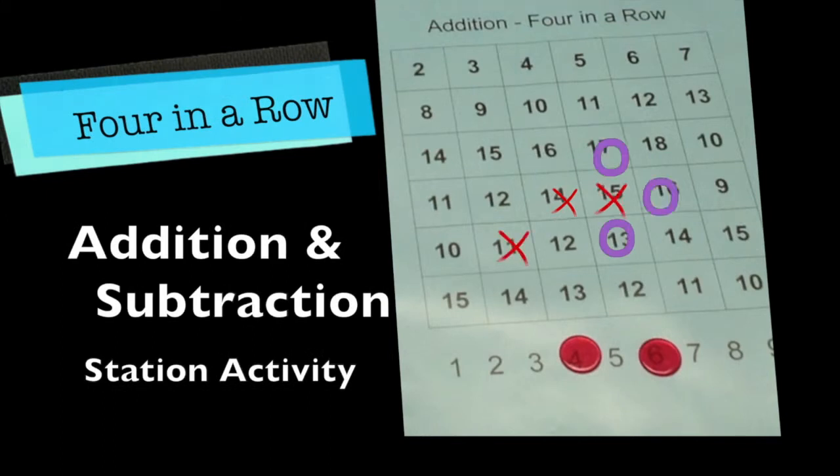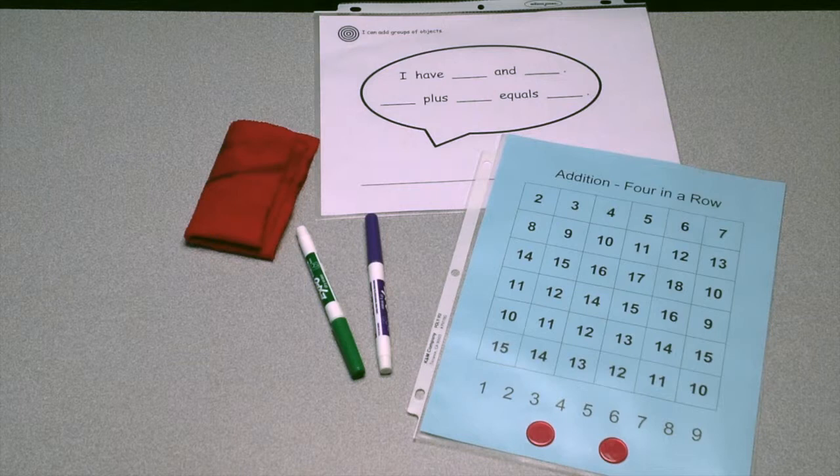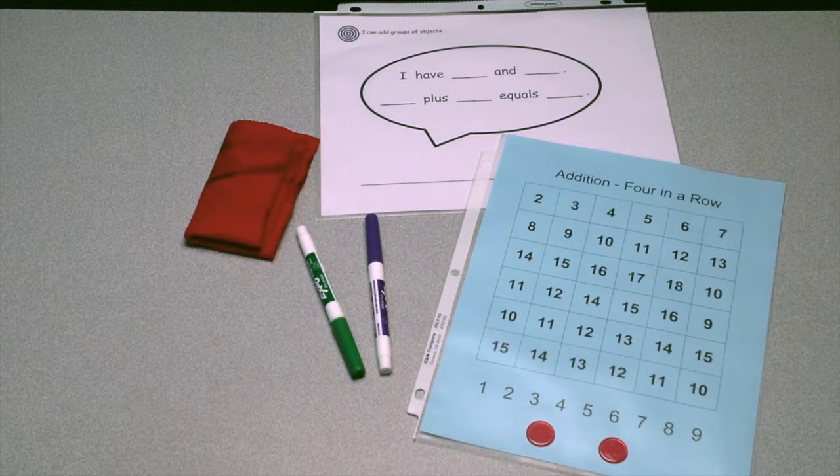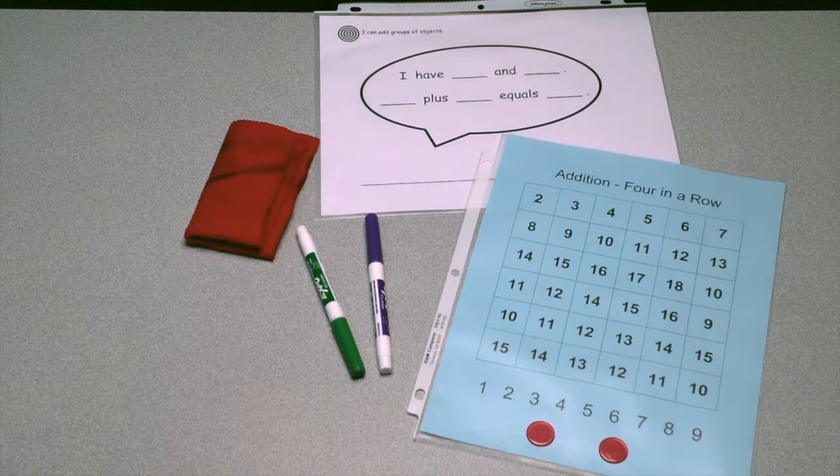This is the 4 in a Row Station Activity which helps students practice grade level fluency standards. For this activity, you will need the 4 in a Row Game Board for the operation and level you are addressing with your students, a Speech Bubble Card, two colors of dry erase markers, an eraser, and two game pieces. This is a two player activity.